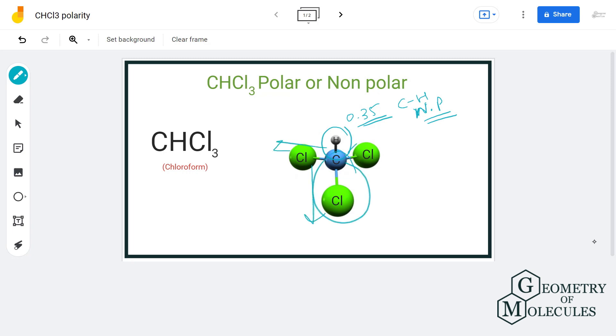That causes high electron density towards the chlorine atom, as seen in this molecular geometry of the molecule. And due to that, there is formation of poles in the molecule.